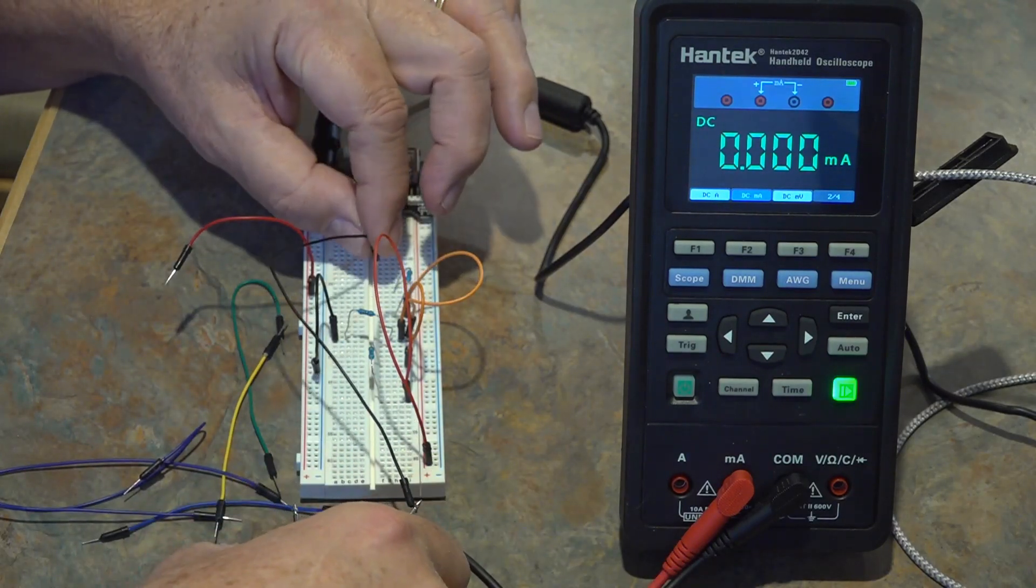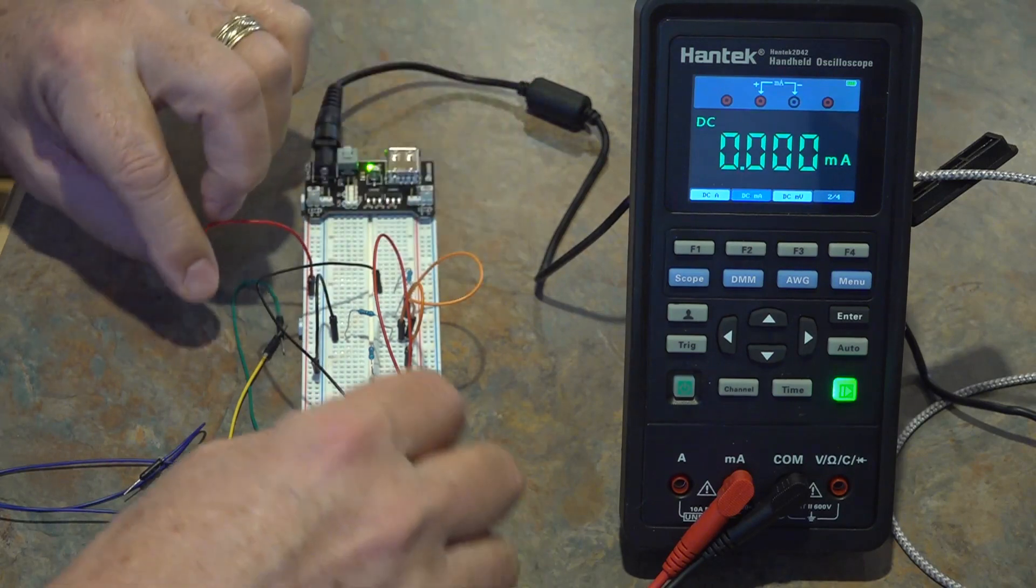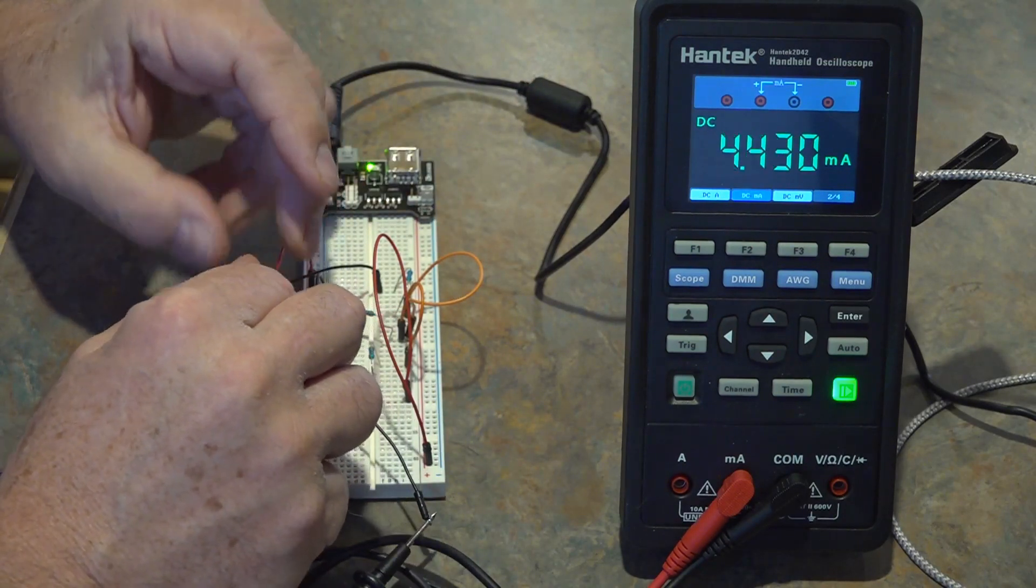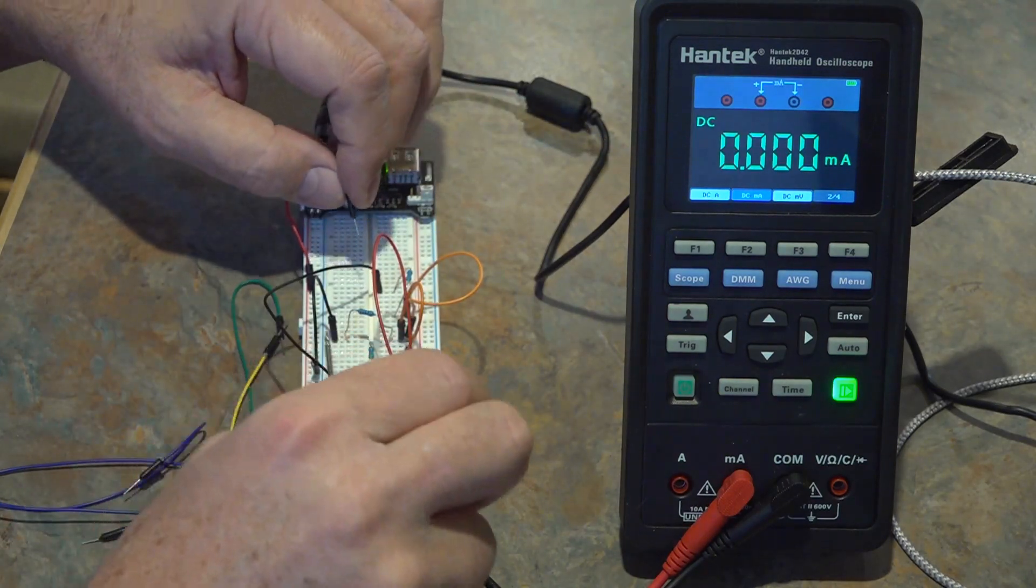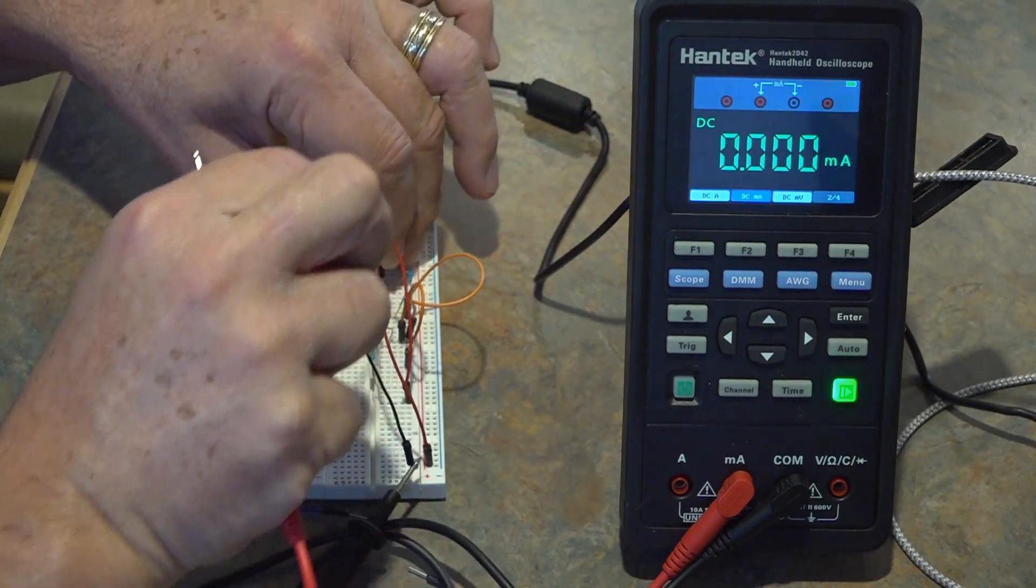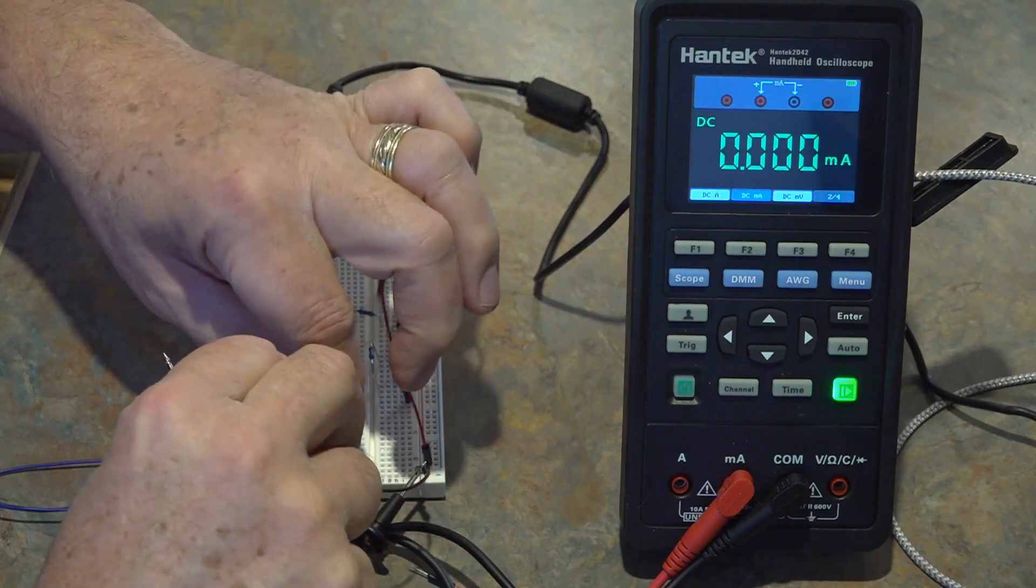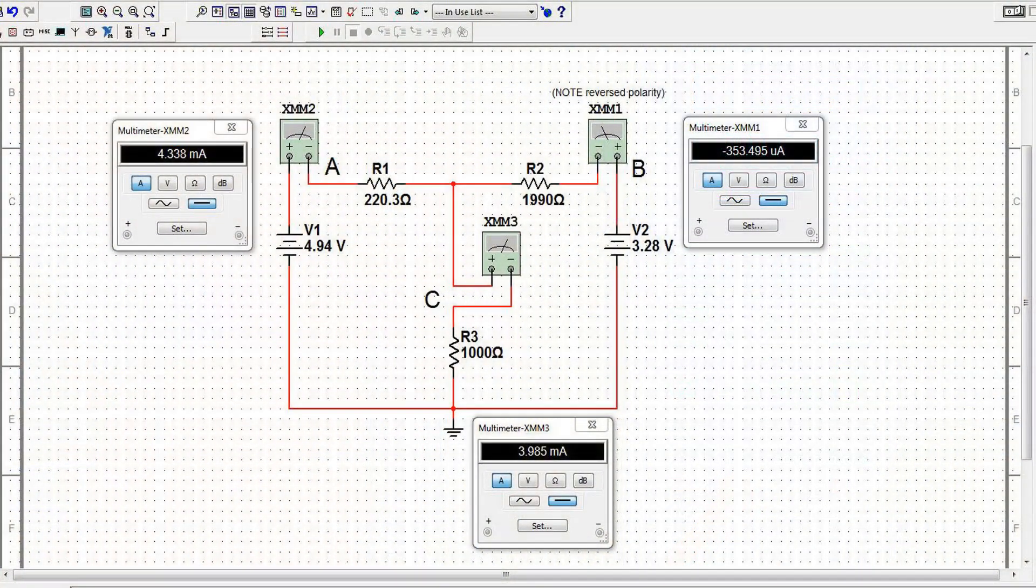Take my ground off the amp meter now and hook up the positive. There we go so I'm now measuring 4.43 milliamps at node A. So that completes the testing of my small circuit.